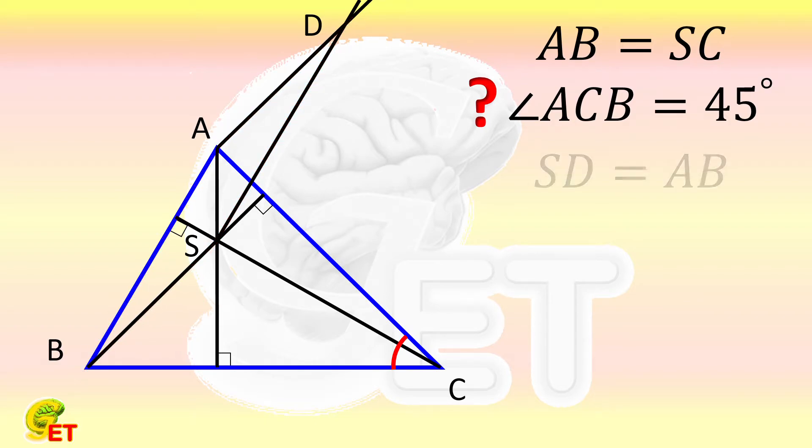So SD is equal to AB, which means SD is equal to SC. Meanwhile, since SC is perpendicular to AB, SC is also perpendicular to SD.